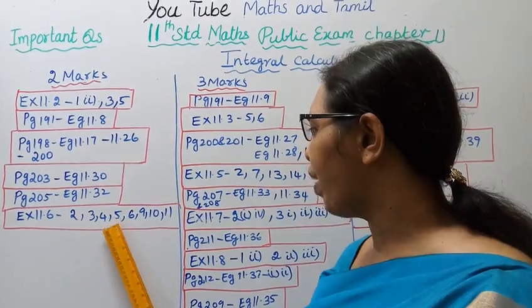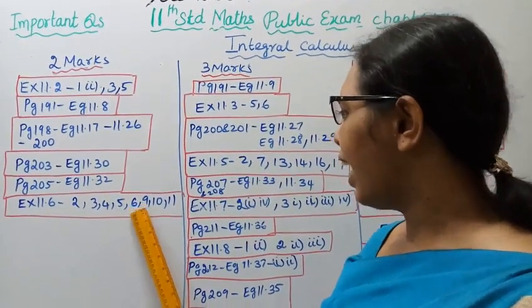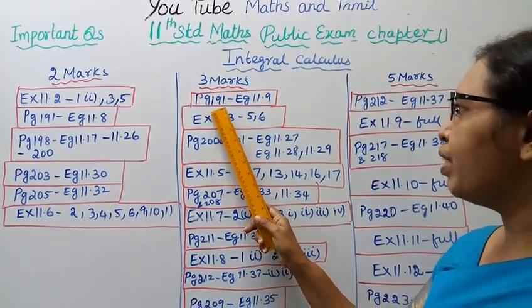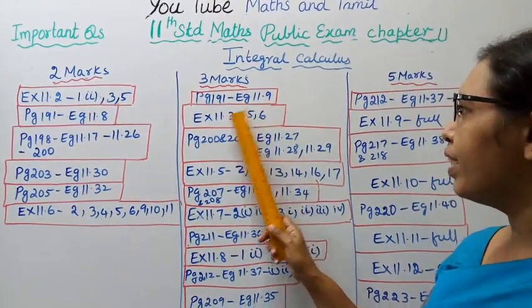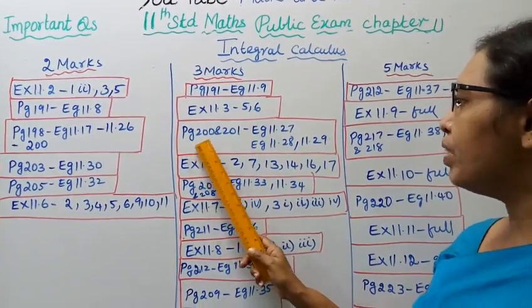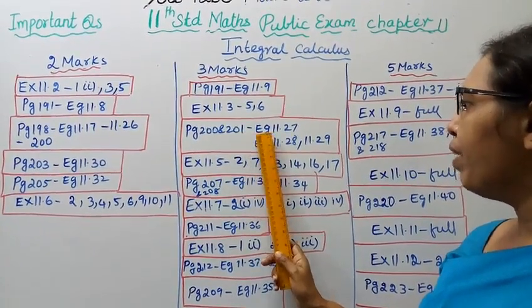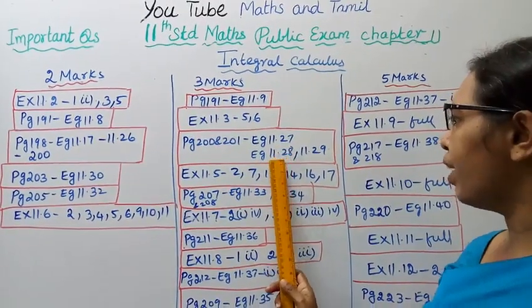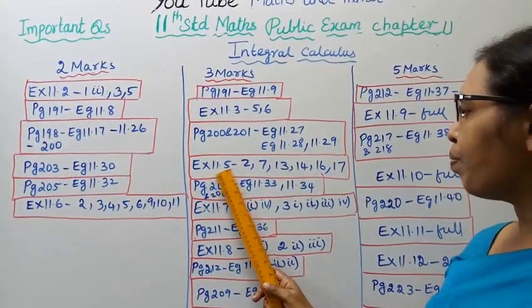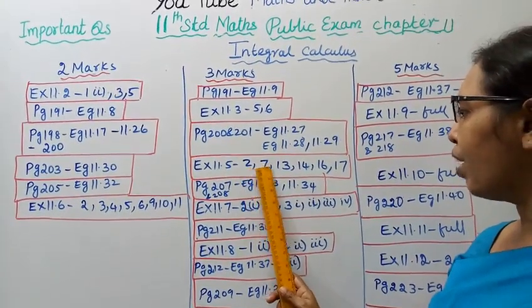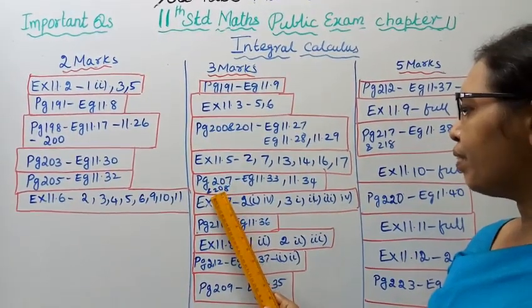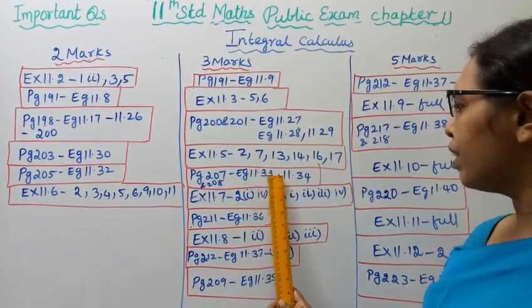For 3 marks: Page 191 Example 11.9, Exercise 11.3: fifth sum, sixth sum. Page 200 and 201 Example 11.27, 11.28, 11.29. Exercise 11.5: 2, 7, 13, 14, 16, 17. Page 207-208 Example 11.33, 11.34.